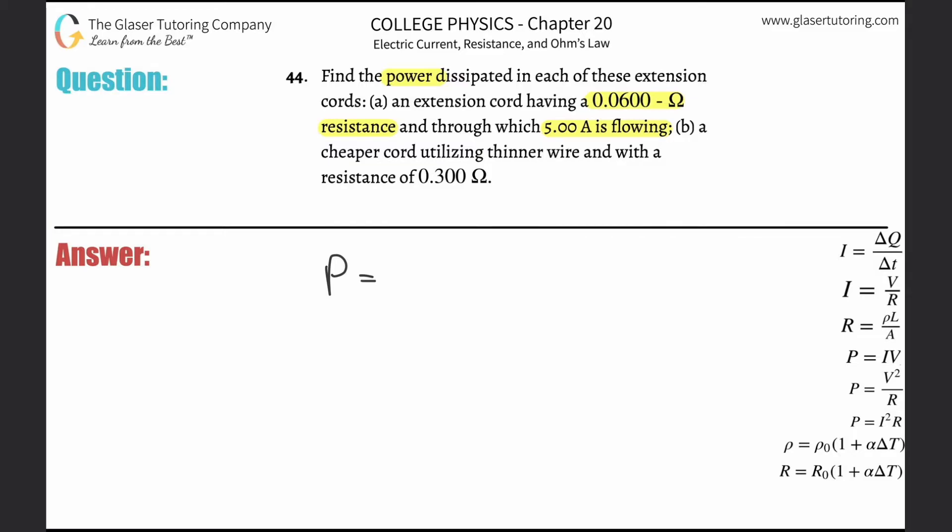Here, the power dissipated in a wire is going to be equal to the current flowing through that wire squared, multiplied by the resistance of that current flow in the wire. So all I need to do is plug it in.